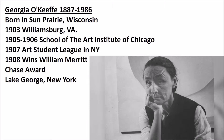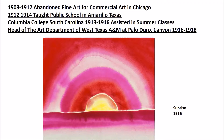She was born in 1887 in Sun Prairie, Wisconsin. She lived there with her family and eventually they moved to Williamsburg in 1903. From 1905 to 1906, she went to the School of the Art Institute of Chicago. In 1907, she studied at the Art Student League in New York, and in 1908 she won the William Merritt Chase Award, granting her a scholarship for summer school at Lake George, New York. From 1908 to 1912, she abandoned fine art for commercial art practice in Chicago. From 1912 to 1914, she taught public school in Amarillo, Texas, and during the summer would go to Columbia College in South Carolina. From 1916 to 1918, she was head of the art department at West Texas A&M at Palo Duro Canyon.